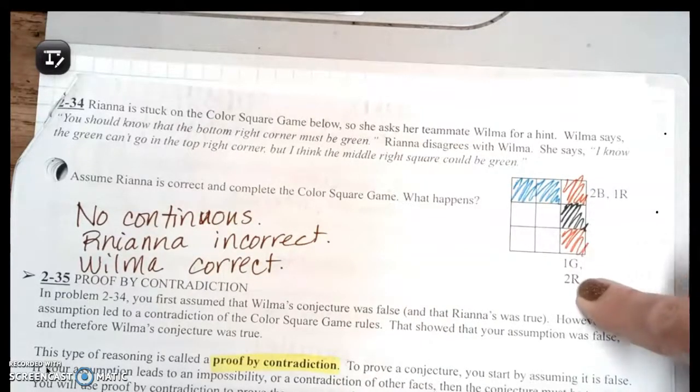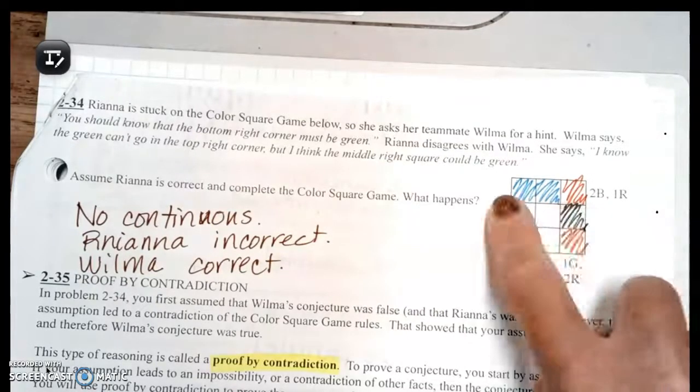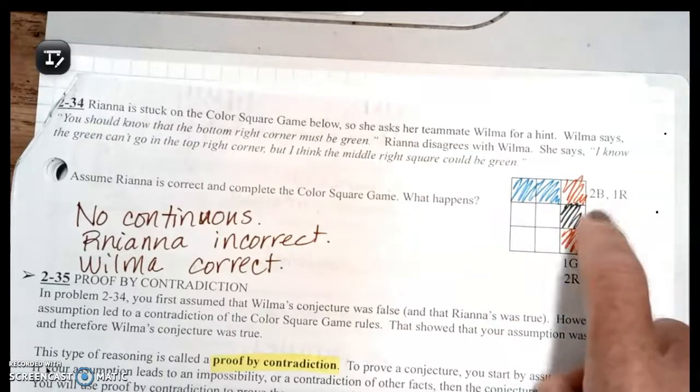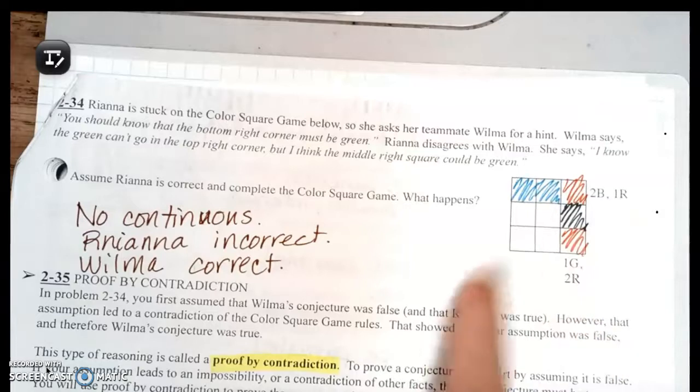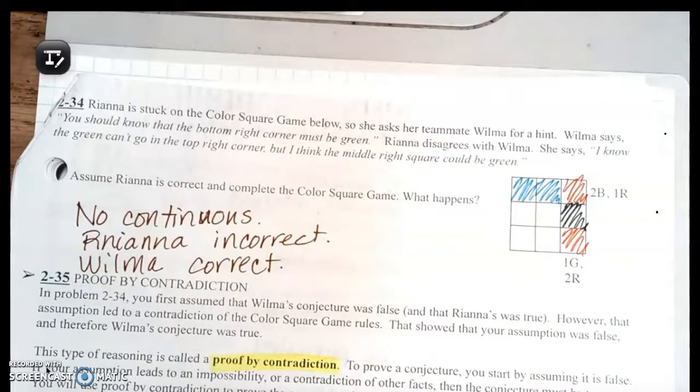Underneath that third column there should be one green and two reds, and Rihanna said that the middle one must be green. So in that middle box write G or color it green, which means that the other two must be red. And then in the first row there's two blues and one red, so there's already a red there, so the other two must be blue. Based on this assumption, the greens can't be continuous, and Rihanna is incorrect and Wilma is correct.